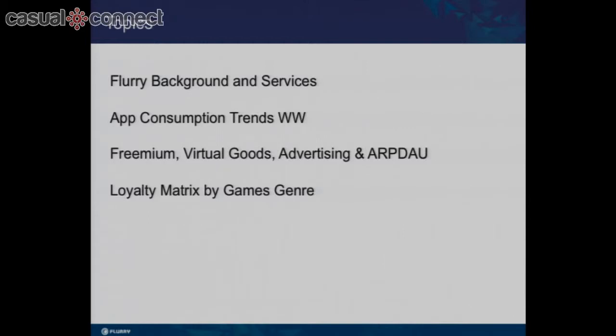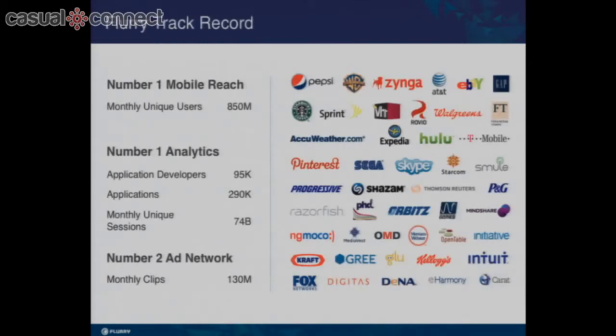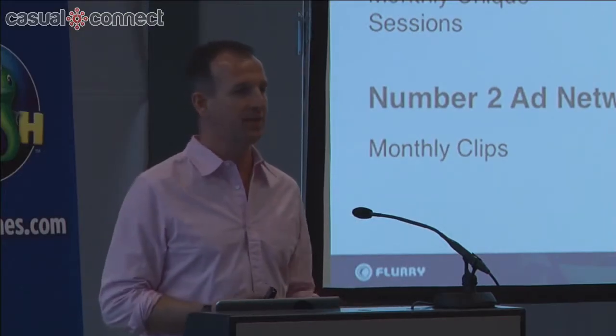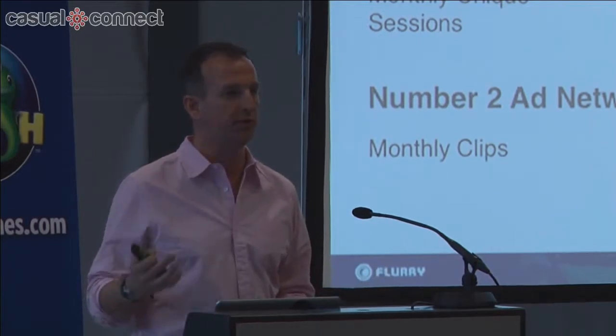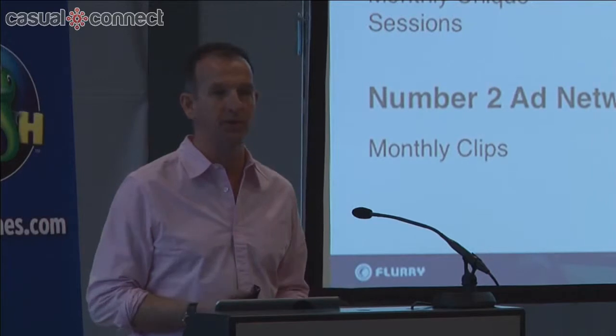For those of you who don't know Flurry, we're an analytics and advertising company. We now track a bewildering number of applications — just over 290,000 applications for about 90,000 companies. So when we produce these slides, it's not extrapolated estimates based on a small panel size like comScore or Nielsen — this is actual data. We think we track almost every active smart device in the world today, because almost every device has at least one app with our software in it. We track for Angry Birds, Fruit Ninja, Tumblr, Skype, Shazam, the New York Times, the Financial Times, and the list goes on.